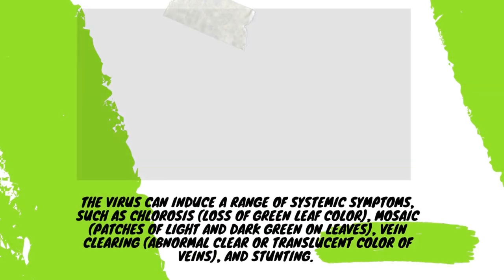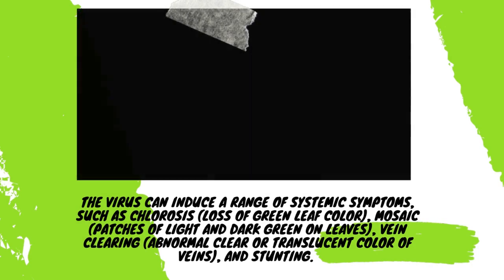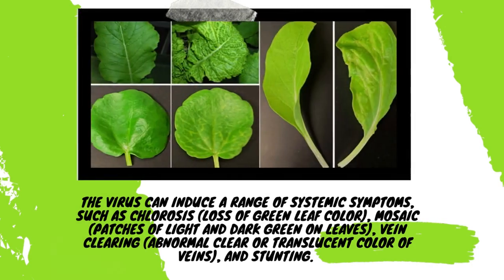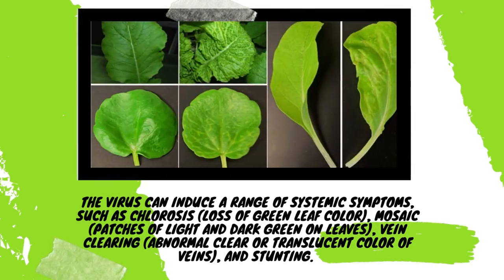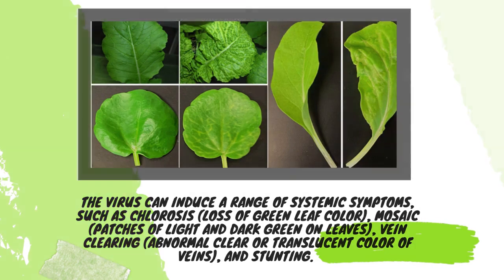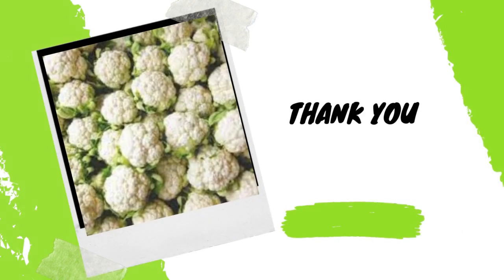The virus can induce a range of systemic symptoms such as chlorosis — loss of green leaf color — patches of light and dark green on the leaf, vein clearing — abnormal clear or translucent coloration of veins — and stunting.